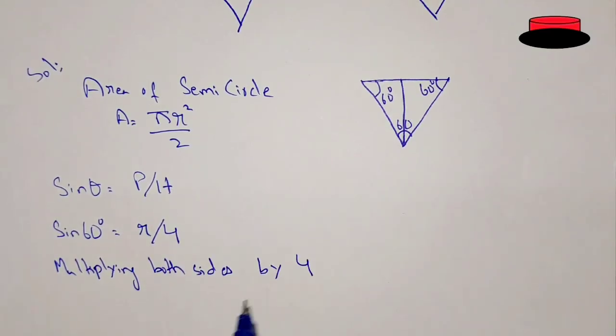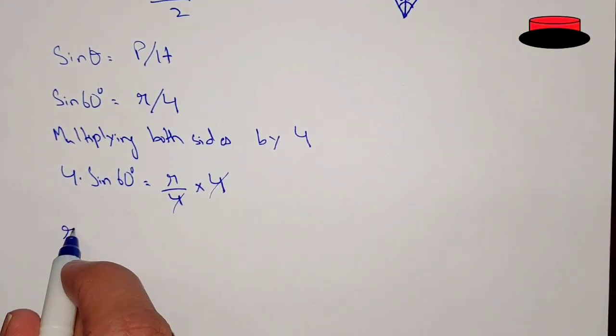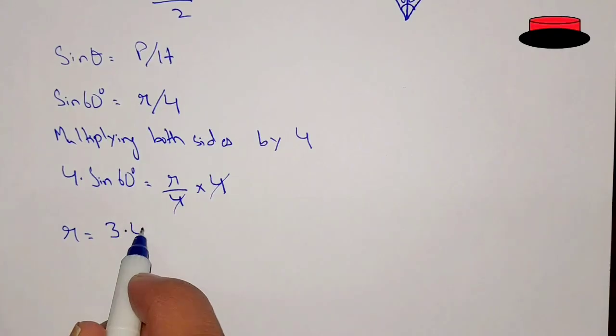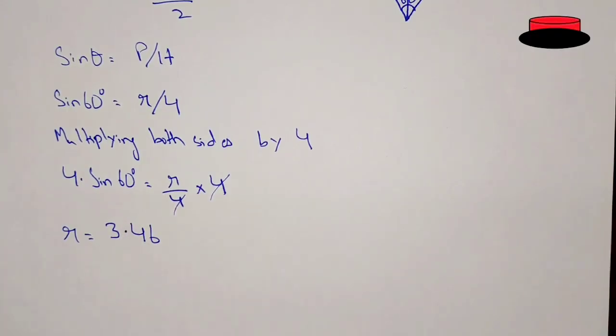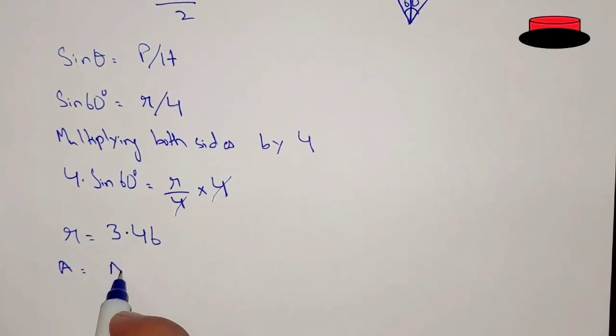Now, multiplying the equation by both the sides by 4. So 4 sin 60 degree equal to r divided by 4 multiplied by 4. 4, 4 will be cancelled. Now, we are left with r equal to 4 into sin 60 that is 3.46. So 3.46 is the radius.